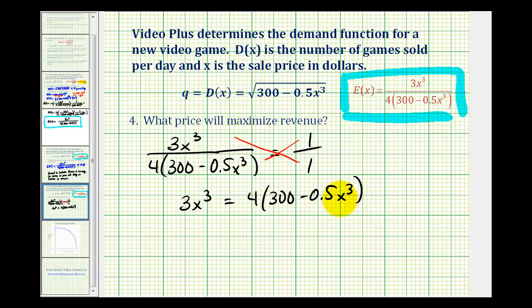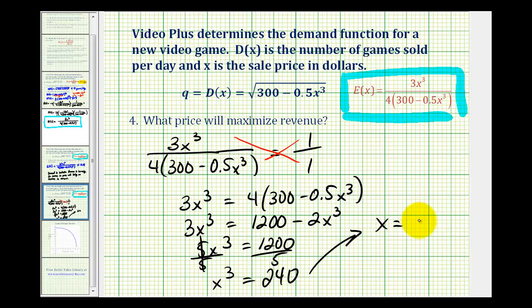So we'll go ahead and distribute the 4 here. We'll have 3x cubed equals 1,200 minus 2x cubed. Now we'll add 2x cubed to both sides, so we'll have 5x cubed equals 1,200. Divide both sides by 5. So we have x cubed is equal to 240.